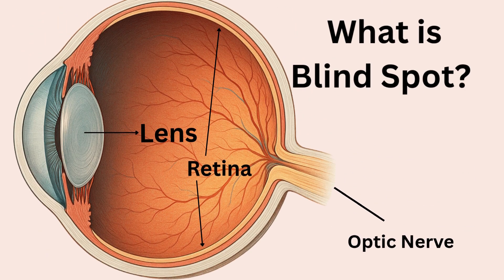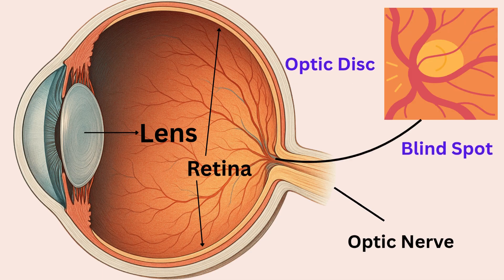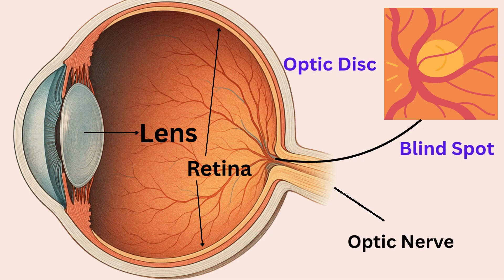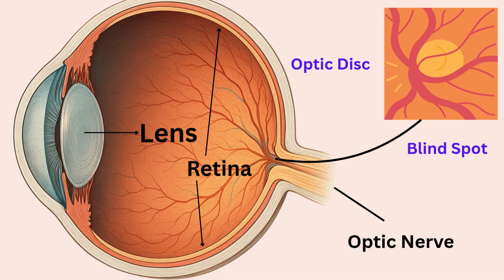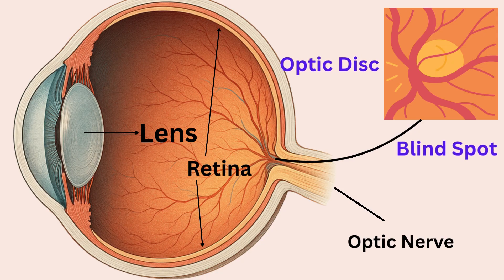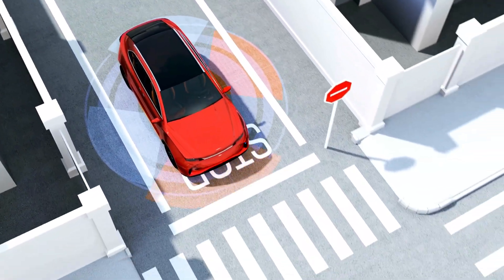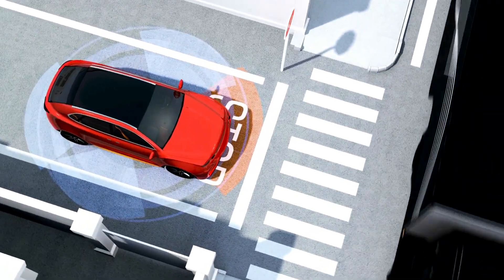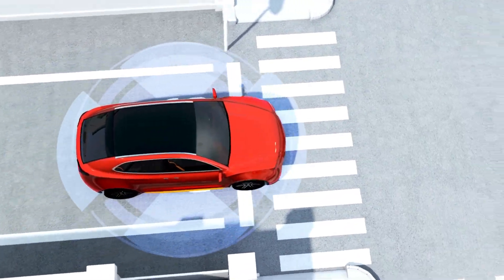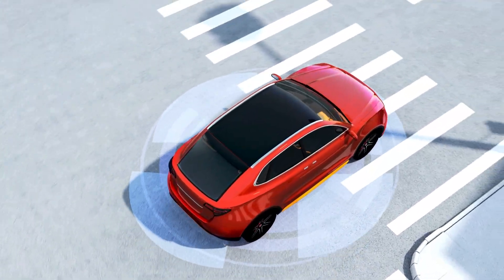Ever heard of your eye's blind spot? It's a tiny area in the retina called the optic disc, where the optic nerve leaves the eye. No rods or cones live here, so it can't detect light. But don't worry — your brain cleverly fills in the gap using surrounding visual data, and your other eye helps out, so you never notice this hidden spot in your vision.